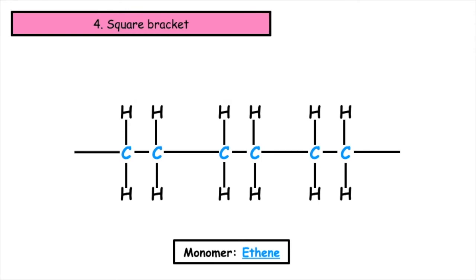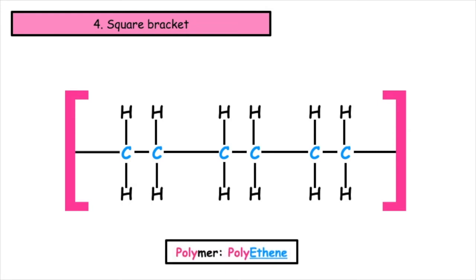Now to name this polymer, we just put the word poly in front of the monomer name. So if the monomer is ethene, the name of the polymer is polyethene.